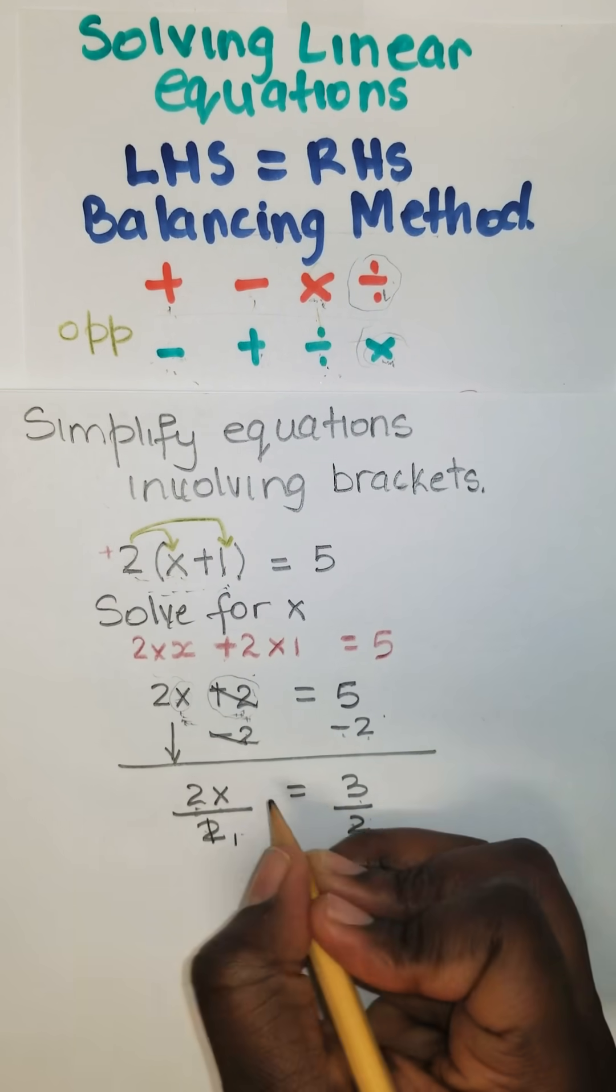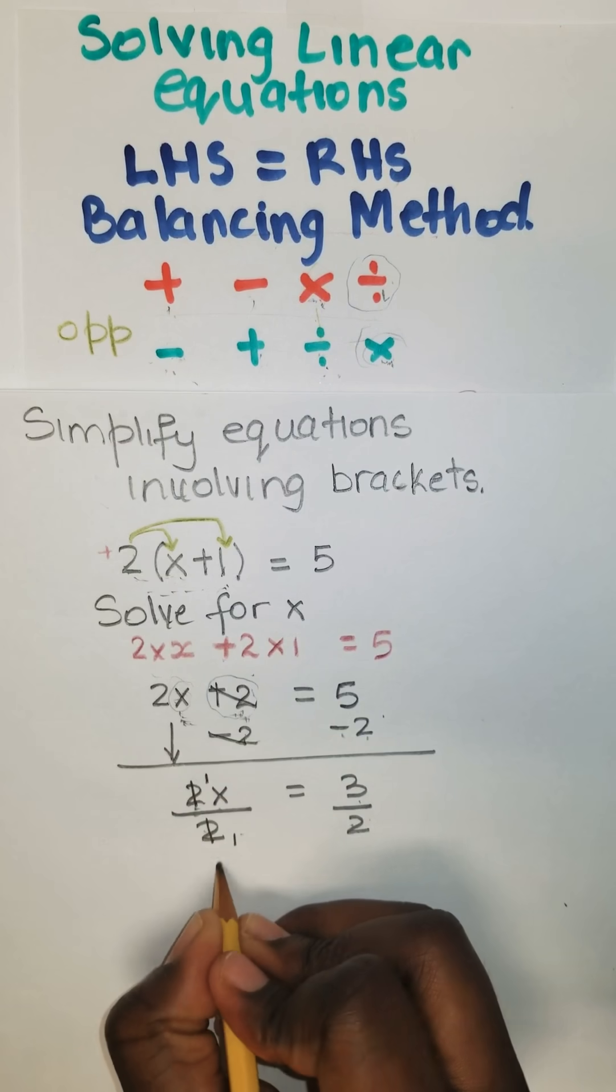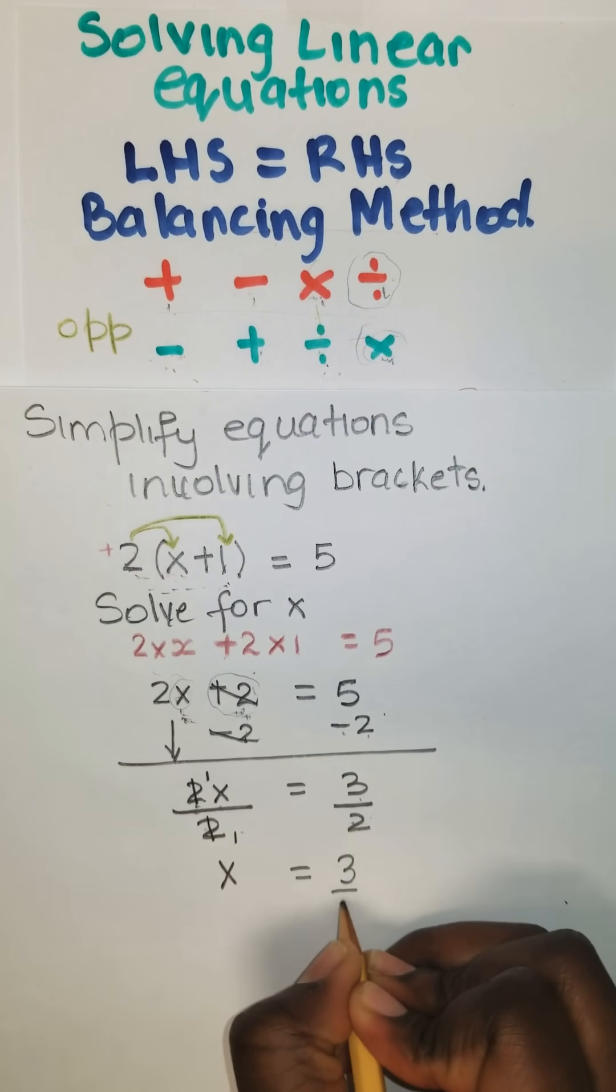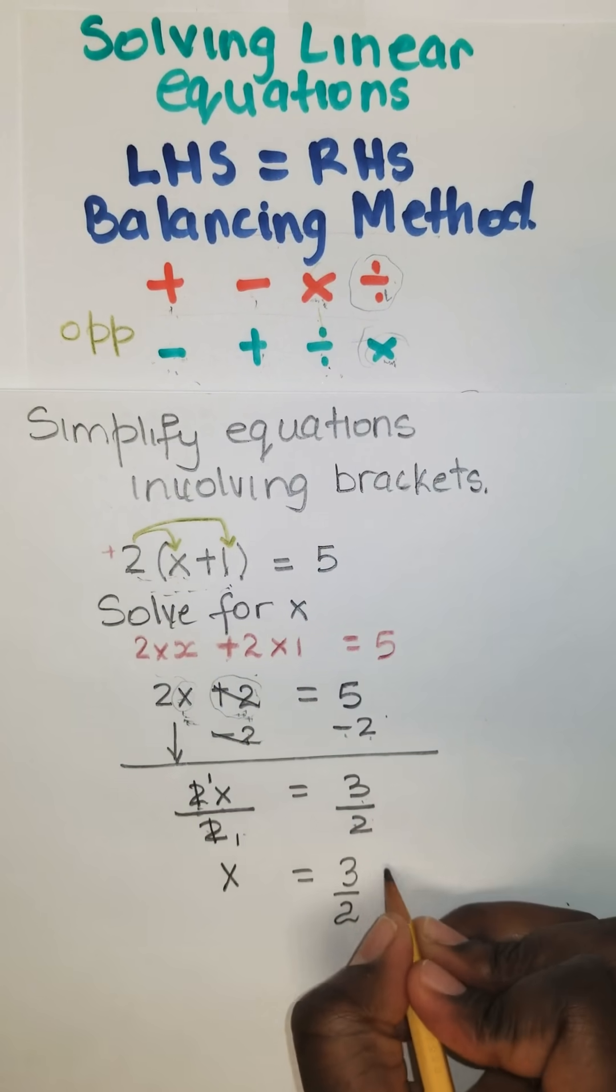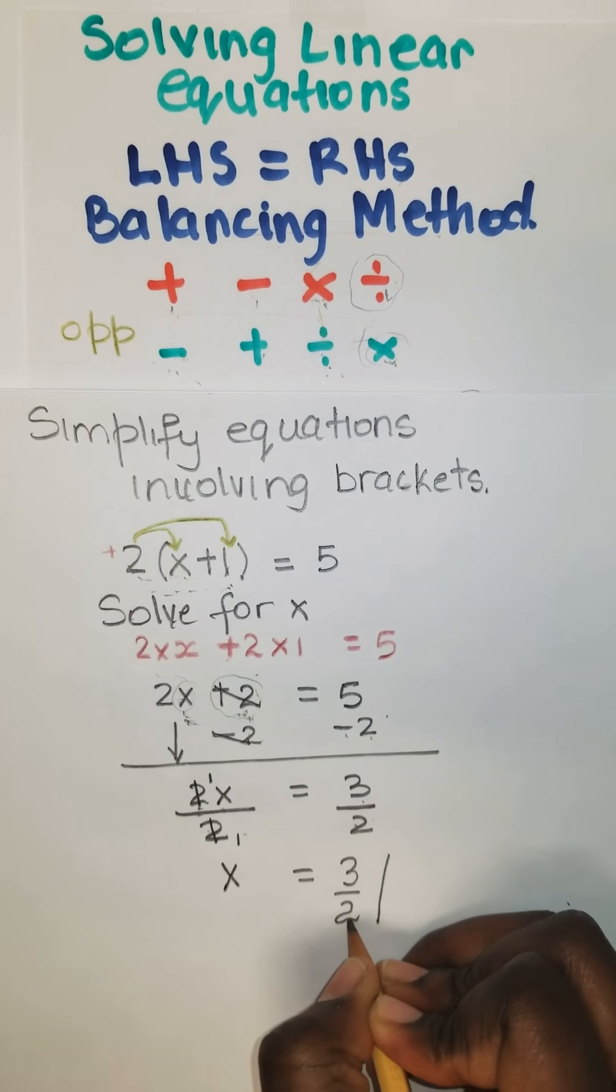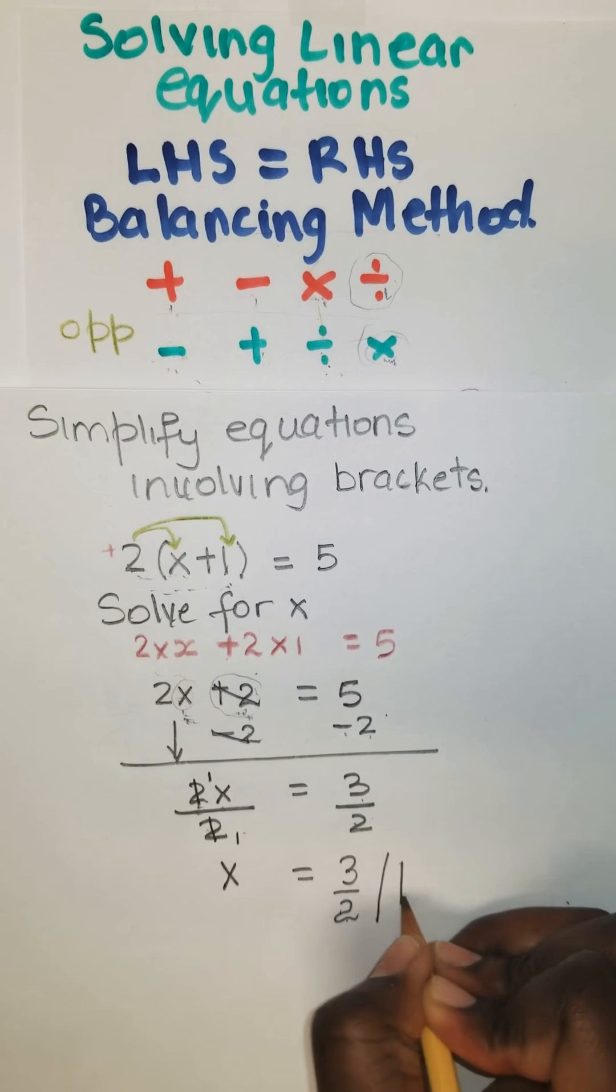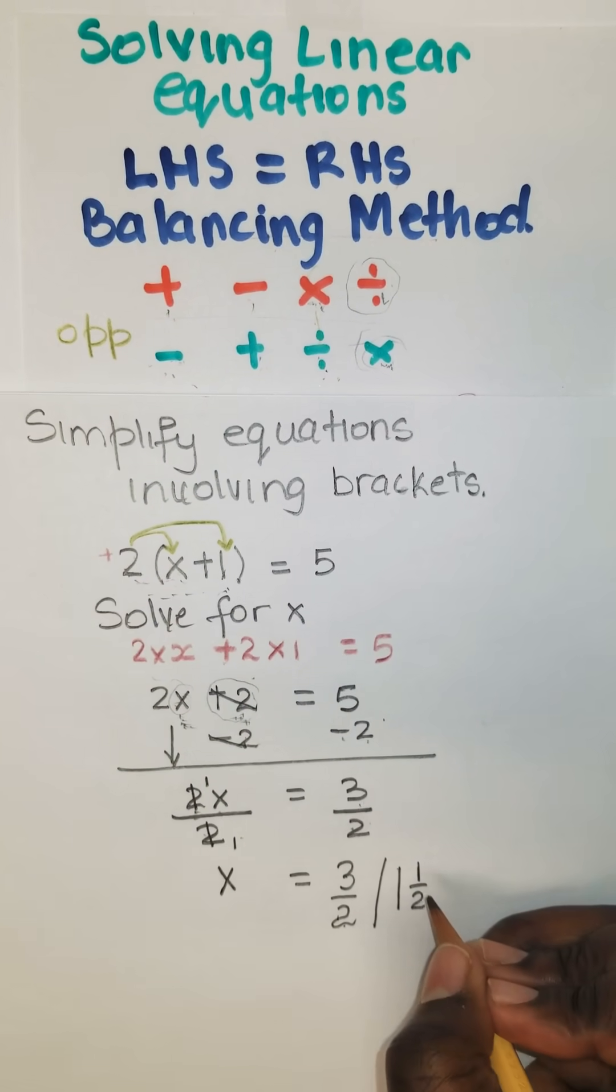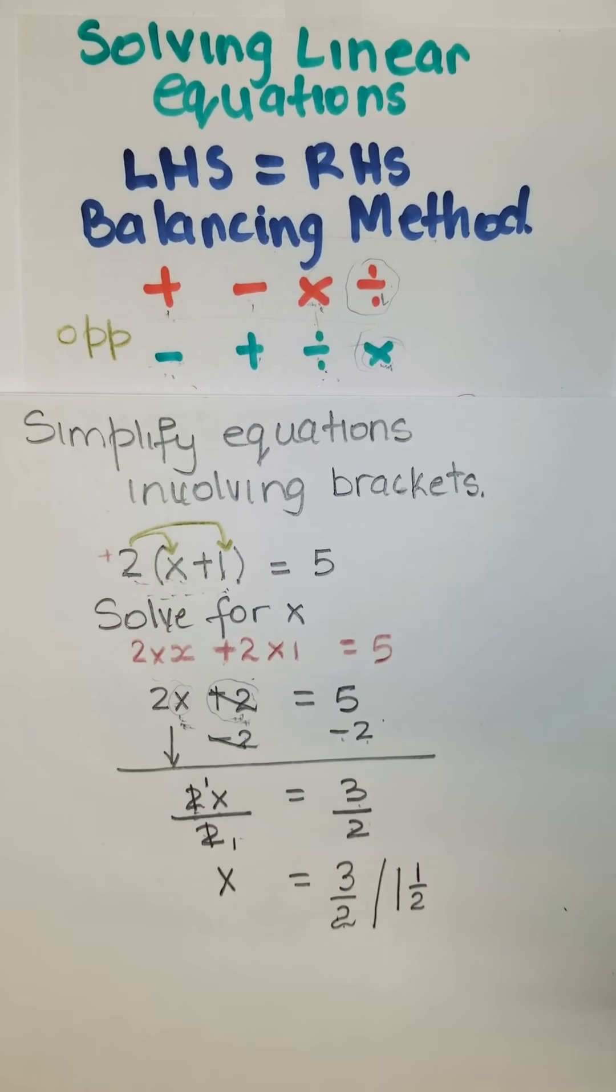So this 2 cancels this 2. So x is equal to, you can rewrite the fraction if you want to, or you can reduce it, say 2 into 2, into 3 goes 1 times. Remain 1 over 2. Or you can put it as a decimal if you want to. But I'm going to leave it as 3 over 2.